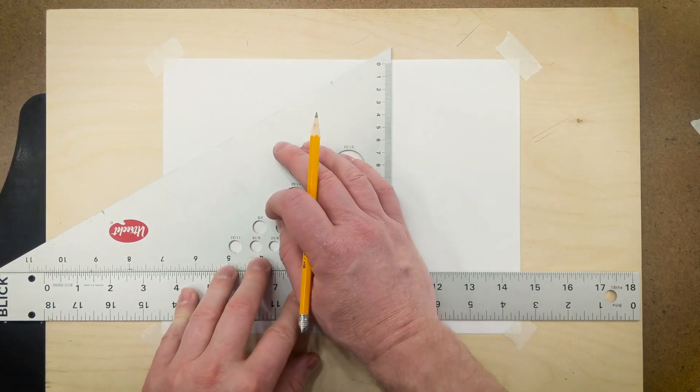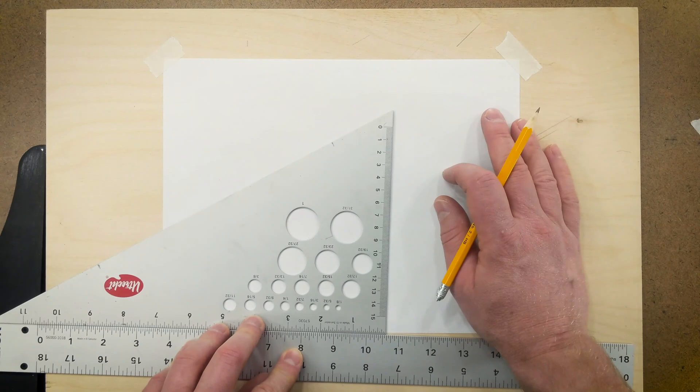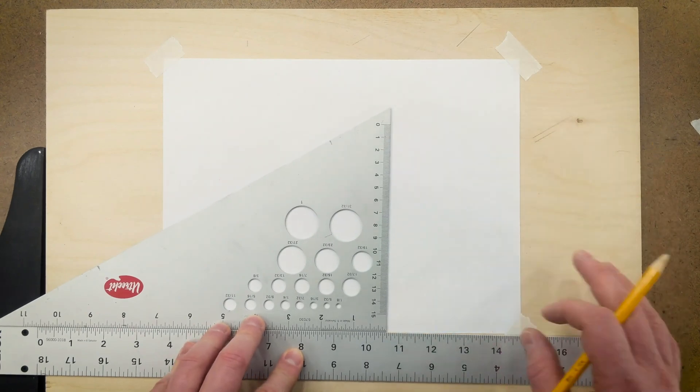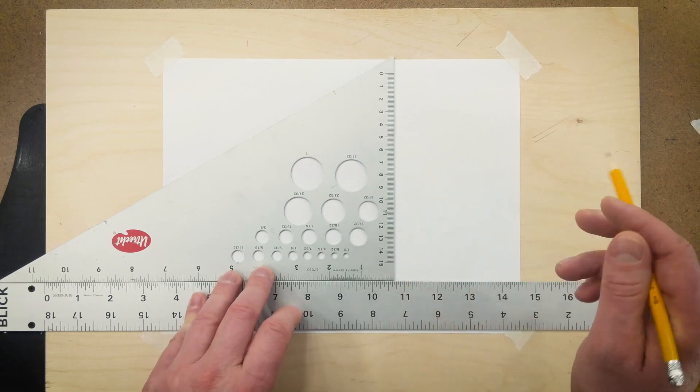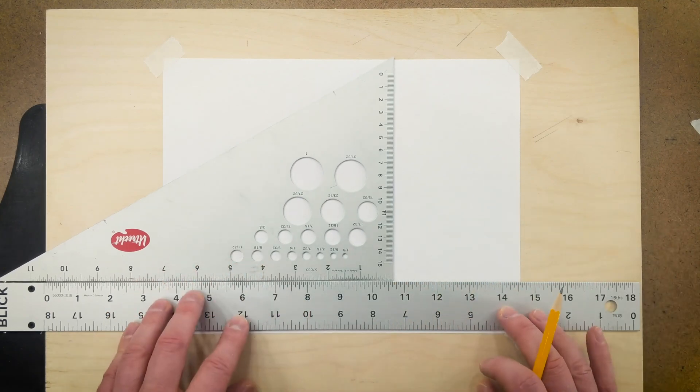Here I have my t-square, a 30-60 triangle, and a piece of paper attached to my drawing board. To see more information about the t-square, triangles, and drawing board, please see the previous video on technical drawing tools.